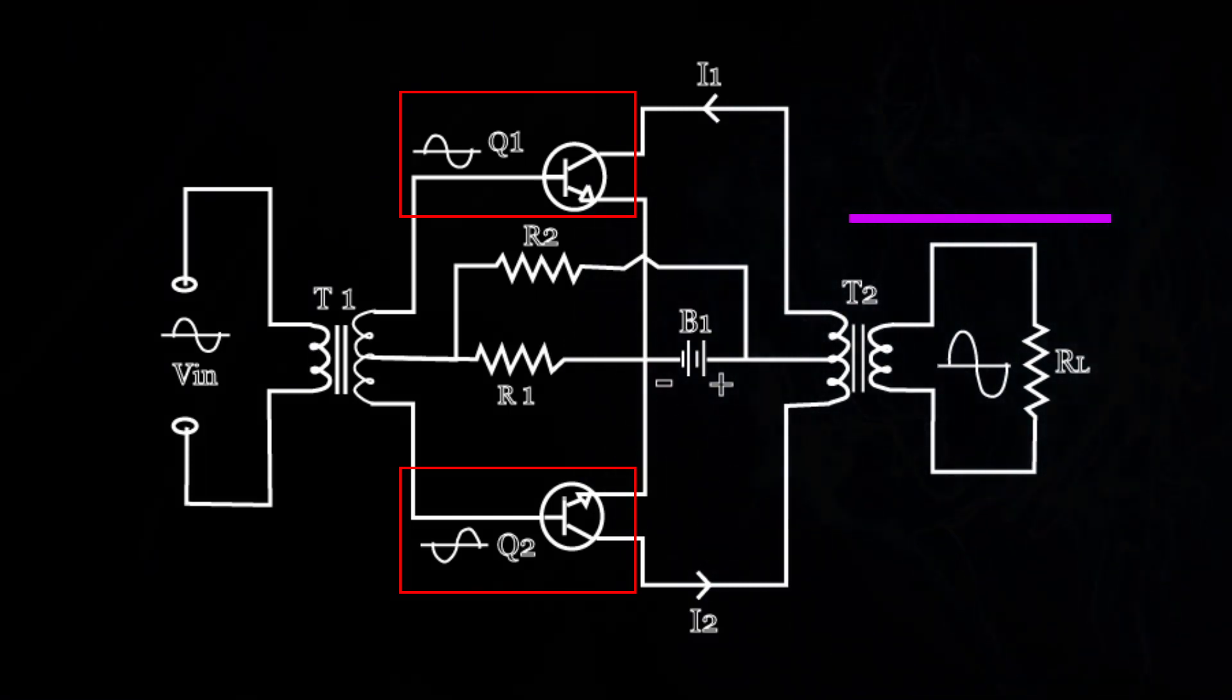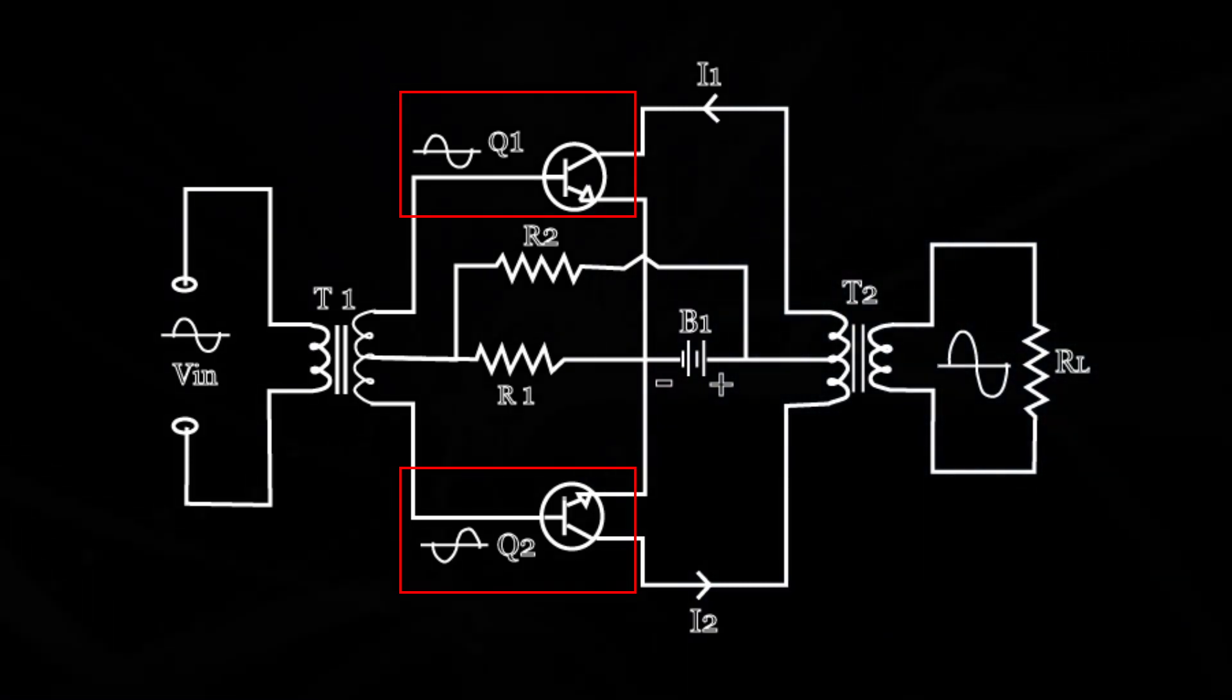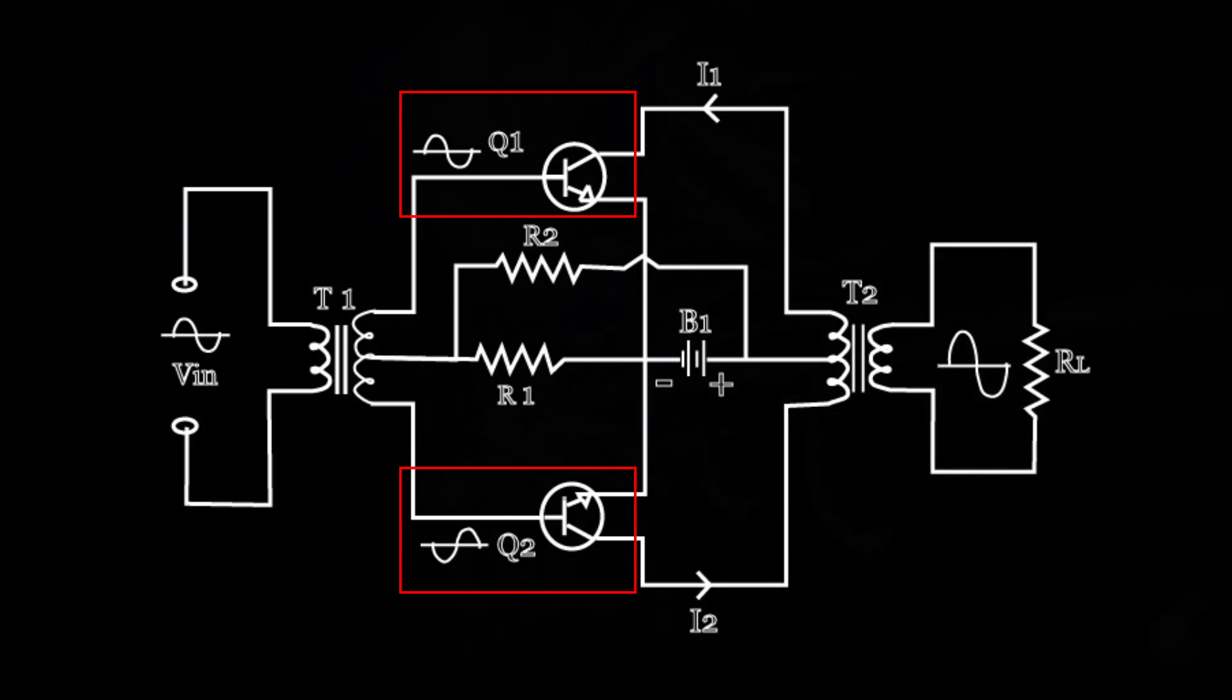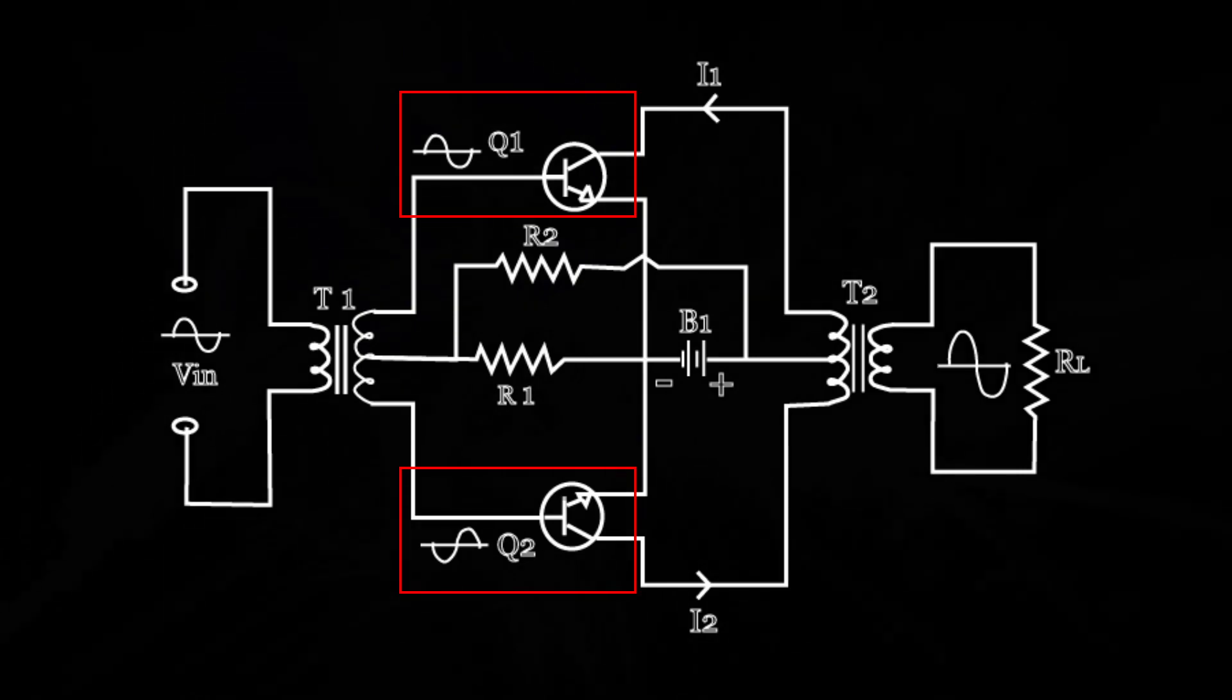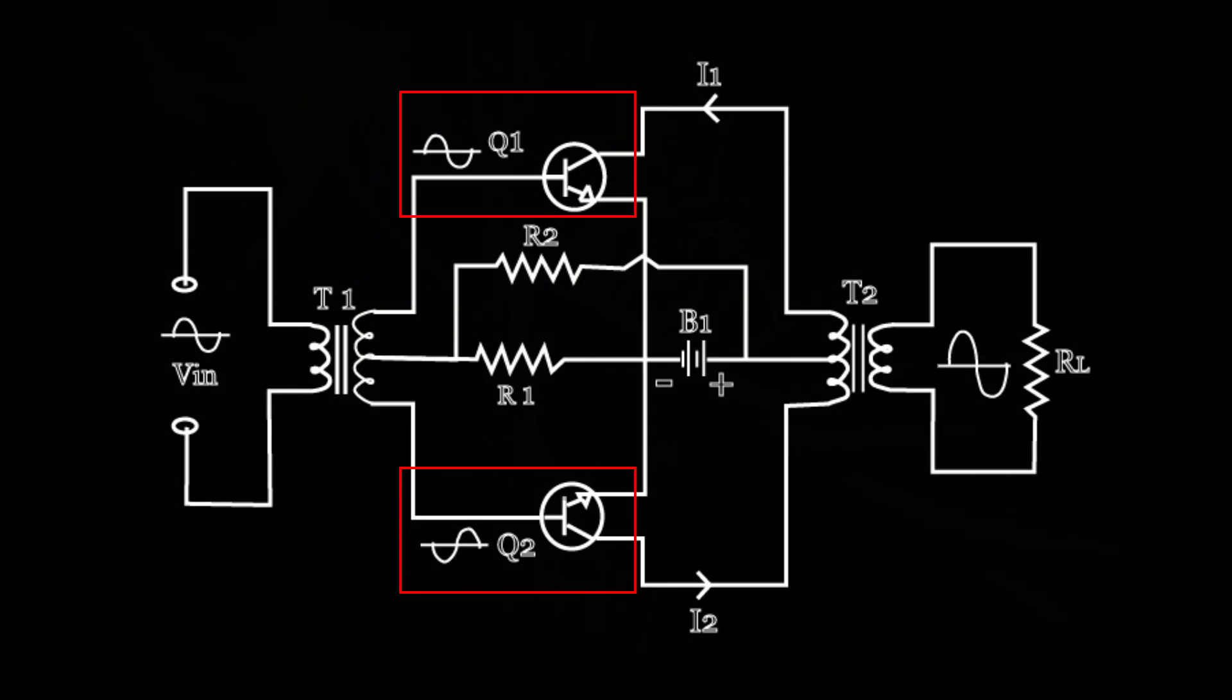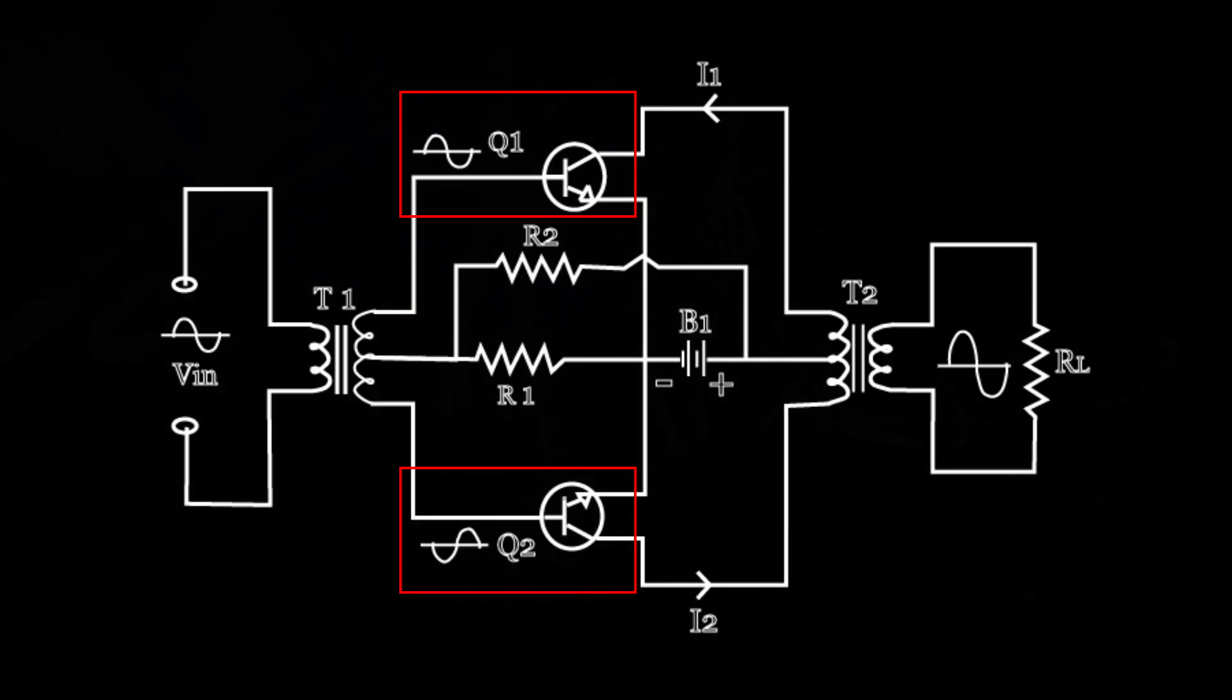From the figure you can see the phase splitting signals applied to the base of each transistor. When Q1 is driven positive using the first half of its input signal, the collector current of Q1 increases.